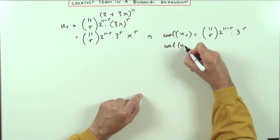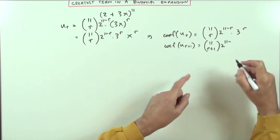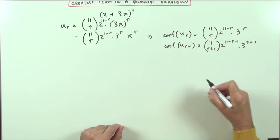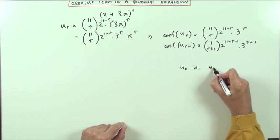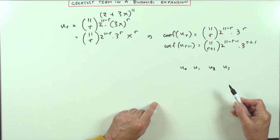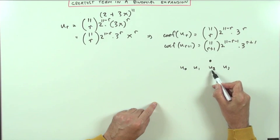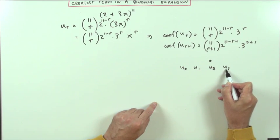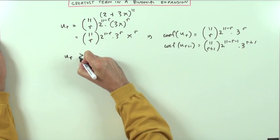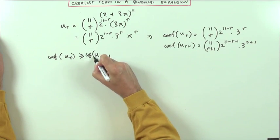The coefficient of the following term is found by replacing r with r+1: C(11, r+1) · 2^(11-r-1) · 3^(r+1). Even though the terms have been skewed, they're still going to rise and fall as a smooth function. The condition for the greatest term is that u_r is greater than or equal to u_(r+1) - since two terms in the middle may be equal before they start falling. So the coefficient of u_r has to be greater than or equal to the coefficient of u_(r+1).